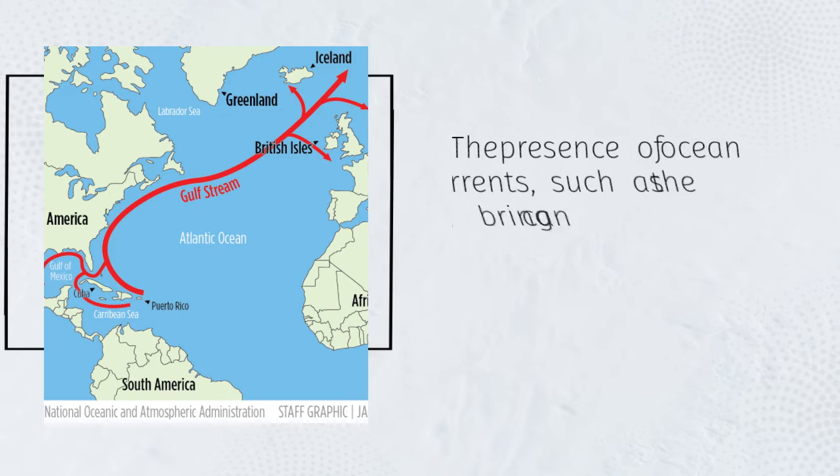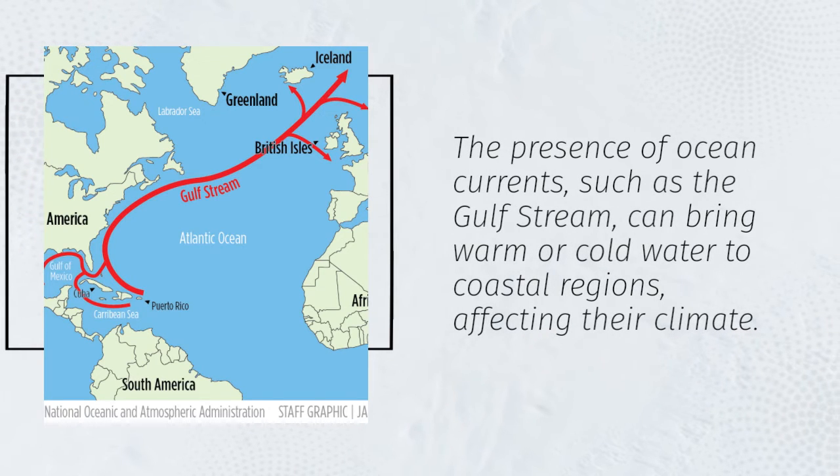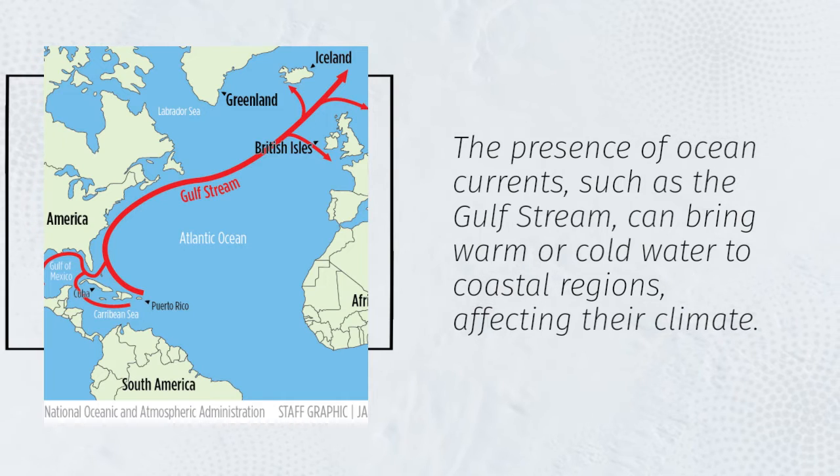The presence of ocean currents, such as the Gulf Stream, can bring warm or cold water to coastal regions, affecting their climate.